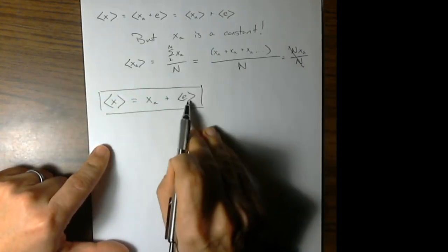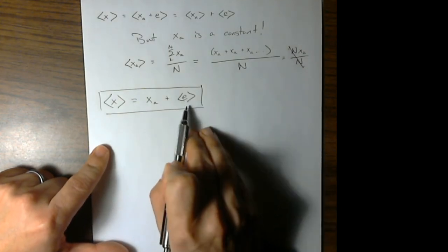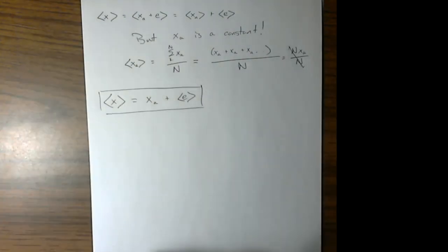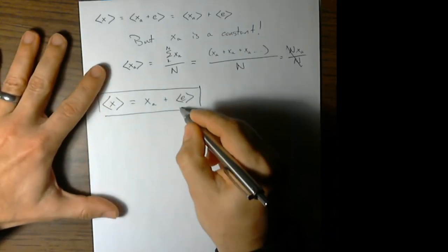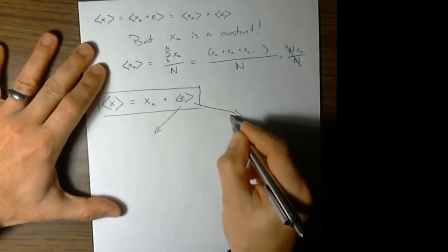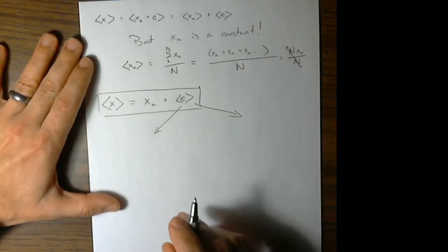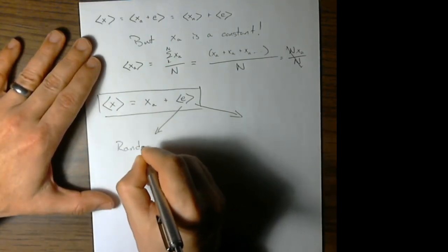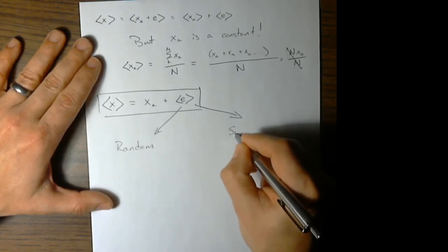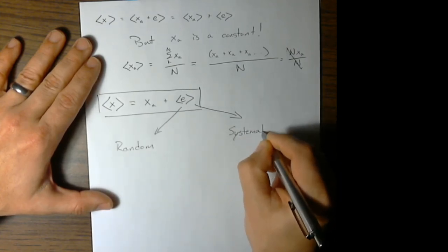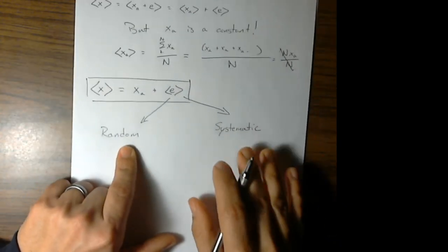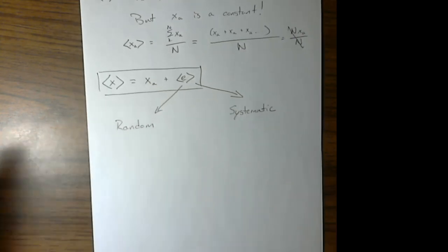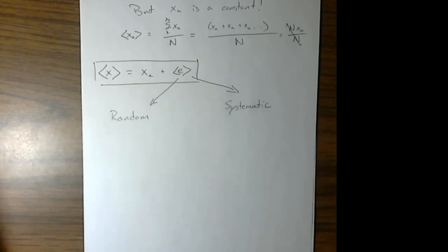Now we need to organize errors into types, based on what we expect the error to be. Error is usually divided into two classes: random error and systematic error. With random error, you get a result with every measurement and there is no predicting what it will be. With systematic error, the error is consistent or at least patterned, so that it is predictable.